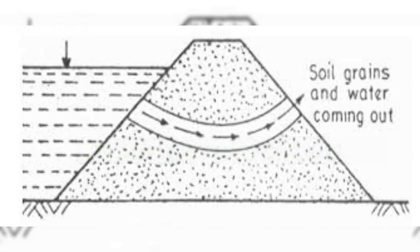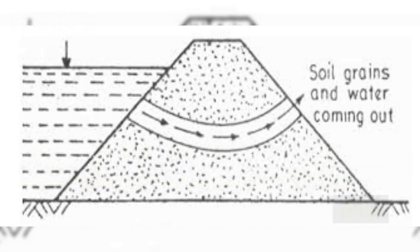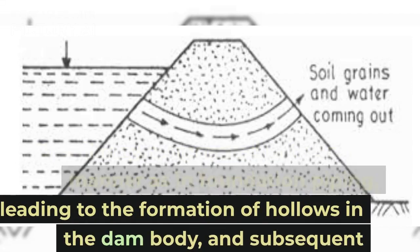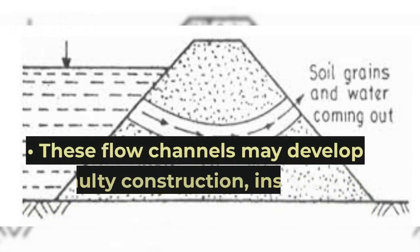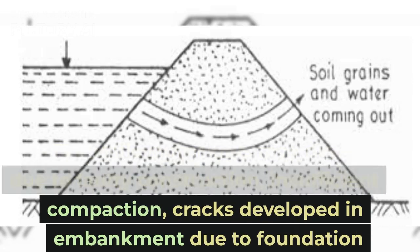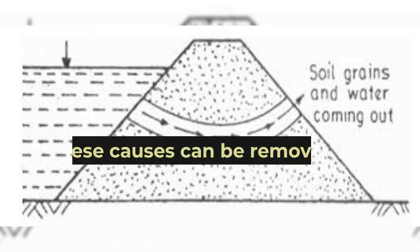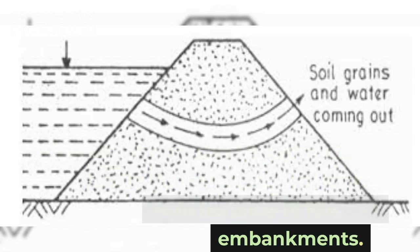2. Piping through the dam body. When concentrated flow channels develop in the body of the dam, soil may be removed in the same manner as in foundation piping, leading to the formation of hollows in the dam body and subsequent subsidence of the dam. These flow channels may develop due to faulty construction, insufficient compaction, cracks developed in the embankment due to foundation settlement, shrinkage cracks, animal burrows, etc. All these causes can be removed by better construction and better maintenance of the dam embankments.